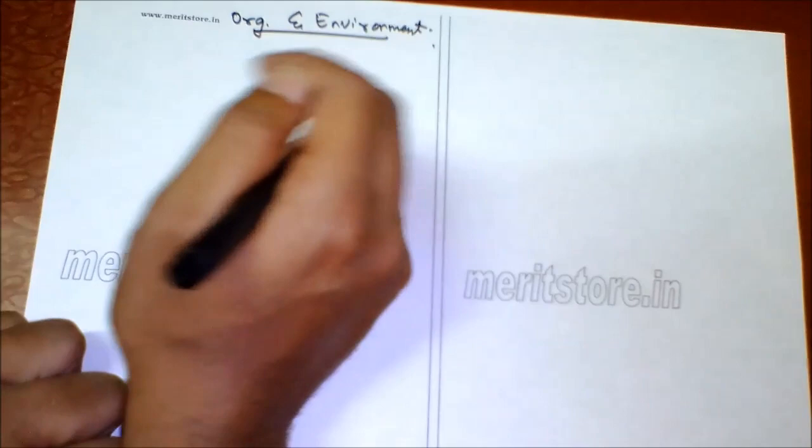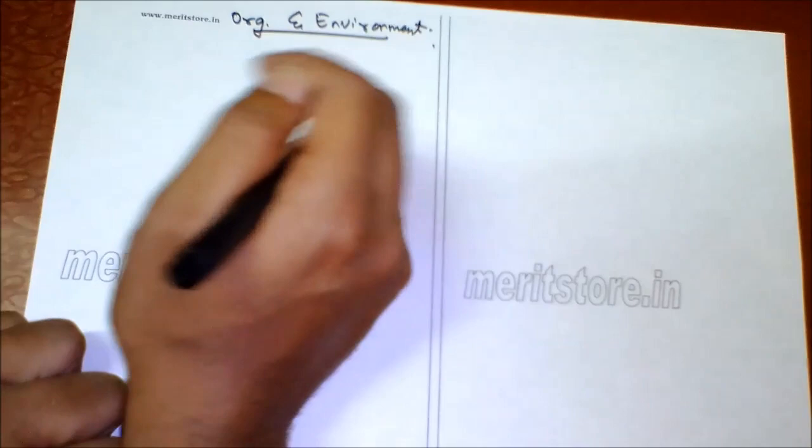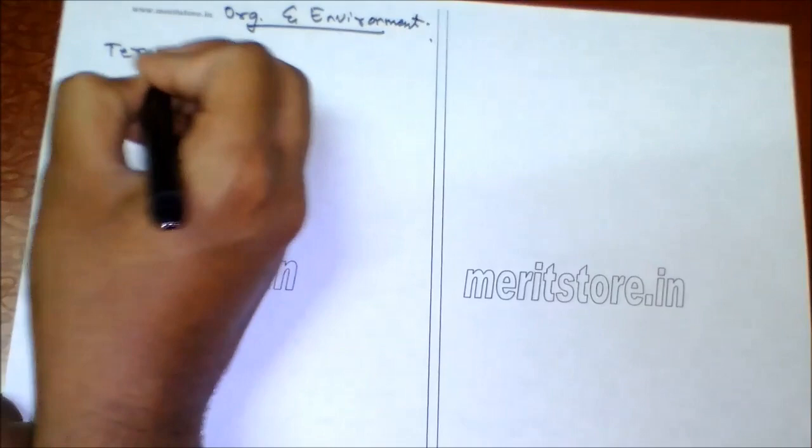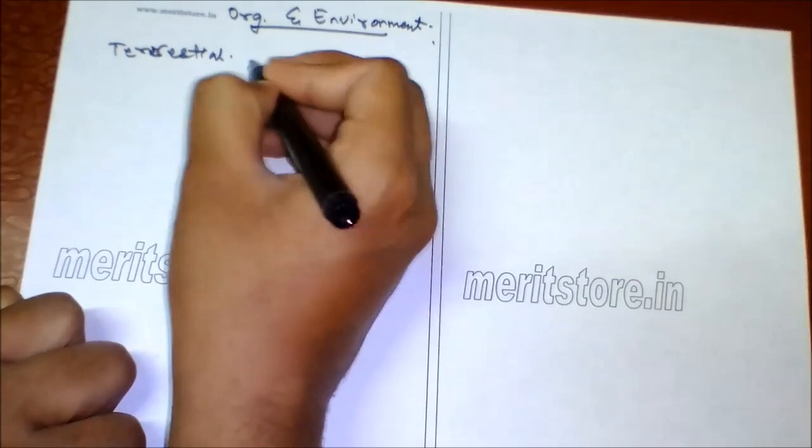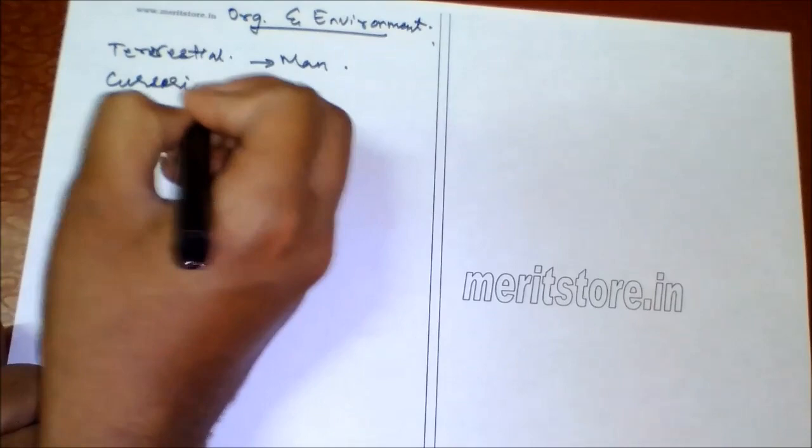There are various types of adaptations that take place by this population, which may be terrestrial, which is on land, for example man. Then there is cursorial, which is also land adaptation.